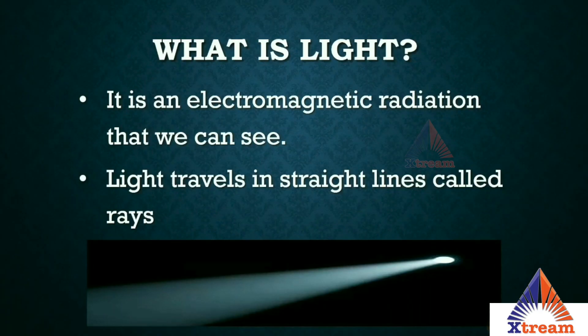Today we are going to learn about light, its reflection, and its refraction. Light is a form of energy that enables us to see things. Visible light is electromagnetic radiation within the portion of the electromagnetic spectrum that can be perceived by the human eye. Light starts from a source and bounces off objects, which are then perceived by our eyes, and our brain processes this signal.